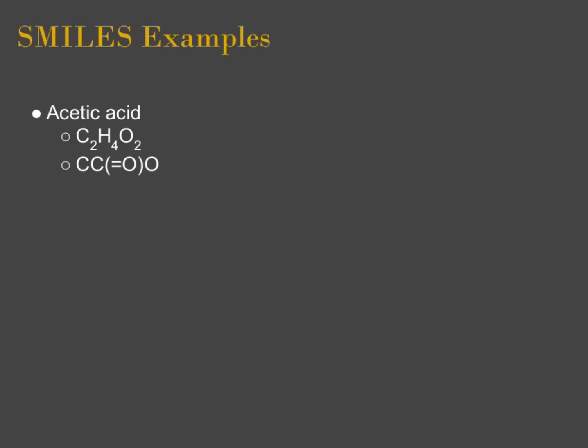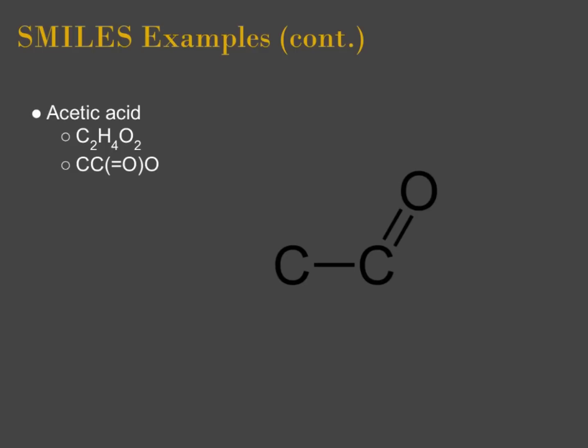An example I'm going to use today is acetic acid, C2H4O2. The SMILES representation is CC(=O)O. In the SMILES representation, you have a carbon, then the next character is also a C, so you have a bond between carbon and carbon. We have a parenthetical which indicates a branch — we will branch to oxygen. Before the O there's an equal sign indicating a double bond, so we make a double bond from the carbon to the oxygen. End parenthesis means our branch is finished, and a final oxygen comes off that second carbon.